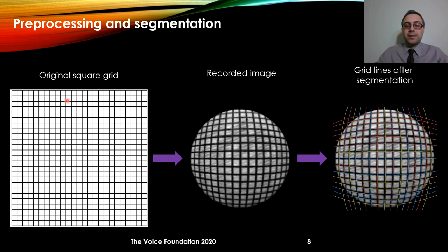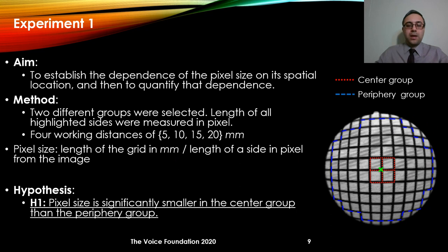In the original grid image, all lines are parallel to each other. However, in the image after segmentation, we see that the parallel lines become bent and bowing — they are no longer parallel with each other. The aim of Experiment 1 was to establish the dependence of pixel size on its spatial location and to quantify it. For this experiment we created two groups: blocks in the center and blocks on the periphery.